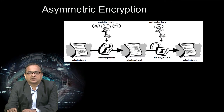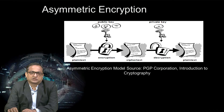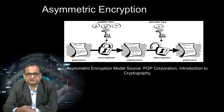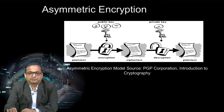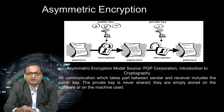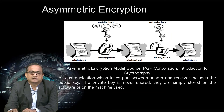Here is a model for this example: we have plain text, a public key, and the encryption algorithm is applied to produce ciphertext. That ciphertext is then decrypted by the private key, and the receiver gets the plain text. All communications between sender and receiver use the public key. The private key is never shared — it is simply stored on the software or machine used.